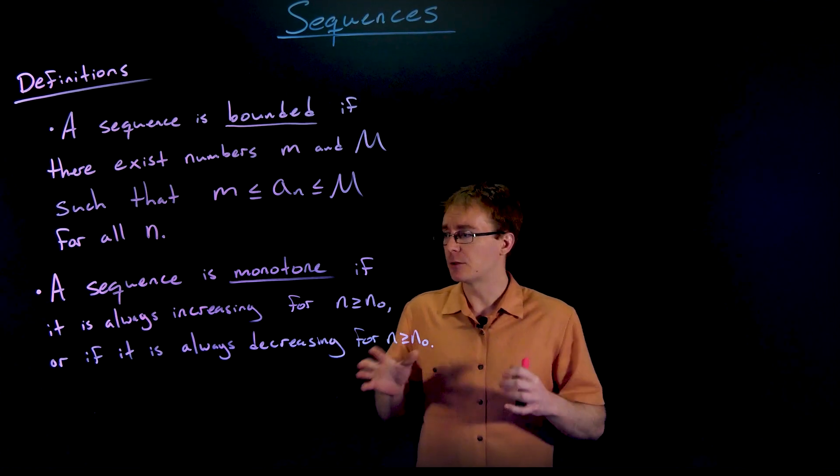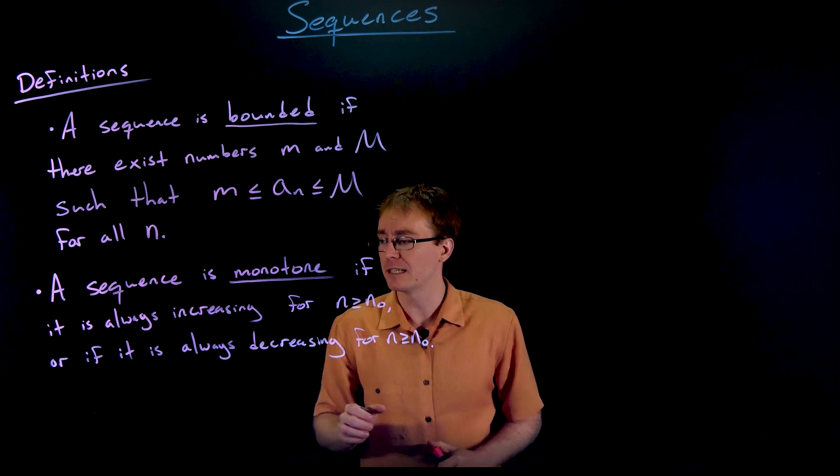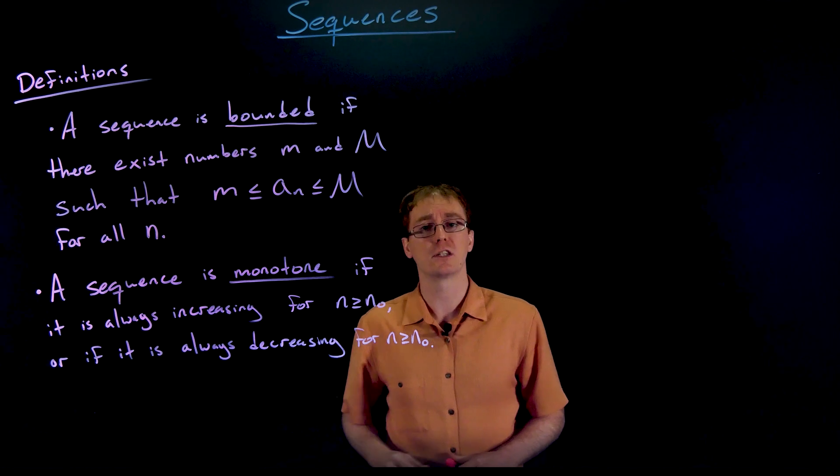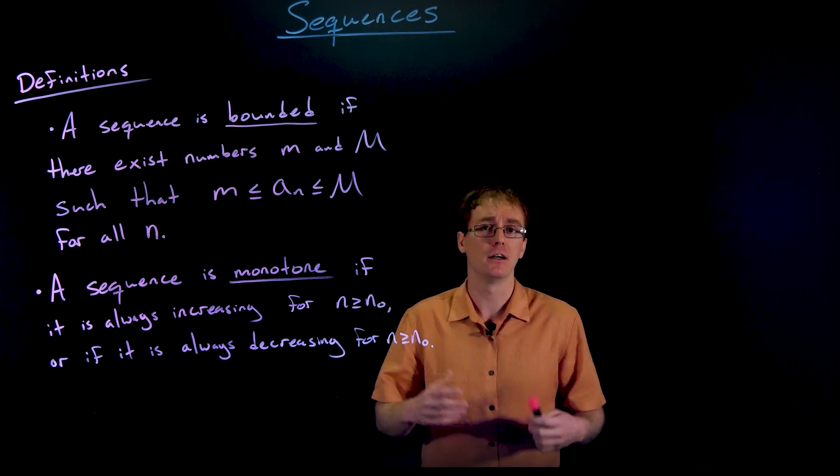A sequence is monotone essentially if after some point it is either always going to be increasing or always going to be decreasing. It always has one type of behavior after a certain point.